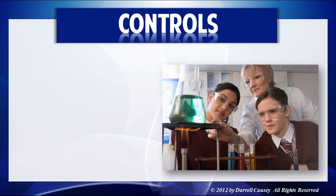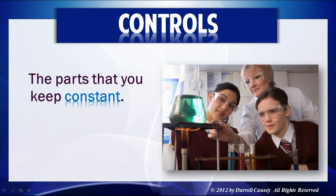Your controls are the things that you keep constant from trial to trial during the experiment. No matter how many times you try it — and you need to do it several times, not just once. Scientists do things over and over and over, and you keep the controls the same.